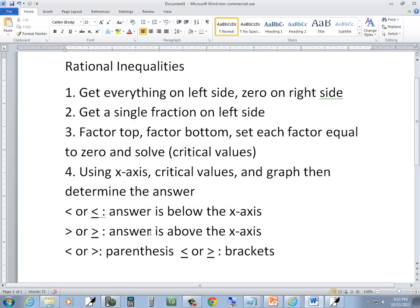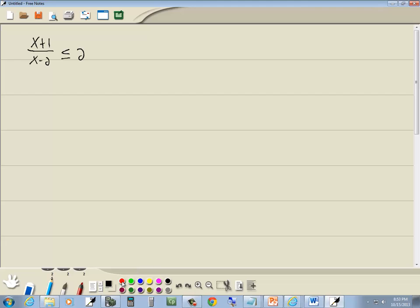Now our first step, get everything on the left side, 0 on the right side. So we're going to take the 2 and move it over to the left side. So we got x plus 1 over x minus 2, minus 2 is less than or equal to 0.